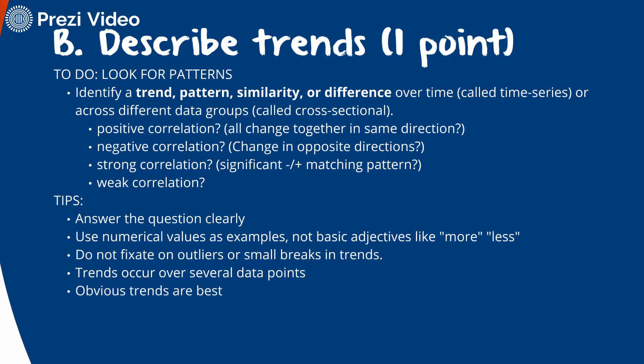The B point is a little more complicated but not the end of the world. We're looking for patterns, trends, similarities, or differences. We can look at them over time — called a time series — or across different data groups, called cross-sectional. Often we're looking for correlation: positive correlation is when one variable increases and the other increases too; negative correlation is when they move in opposite directions. A significant match in the pattern indicates a strong correlation, while weaker patterns indicate weak correlation.